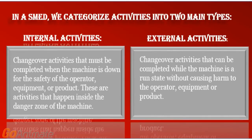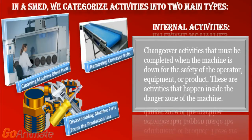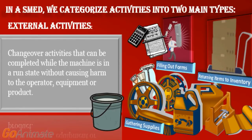In a SMED, we categorize activities into two main types. 1. Internal activities. 2. External activities. Internal activities are activities that must be completed when the machine is down for the safety of the operator, equipment, or product — these activities happen in the danger zone. External activities are changeover activities that can be completed while the machine is in a run state without causing harm to the operator, equipment, or product.